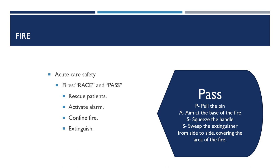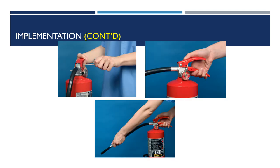Let's talk about fire safety. Fortunately, hospitals are built well and fires don't spread rapidly. Two acronyms to know: RACE and PASS. RACE — R: Rescue the patient; A: Activate the alarm; C: Confine the fire by shutting the doors; E: Extinguish if possible. PASS is how to use the fire extinguisher — P: Pull the pin; A: Aim at the base of the fire; S: Squeeze; S: Sweep.